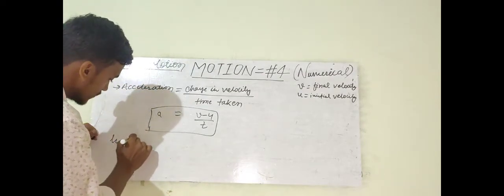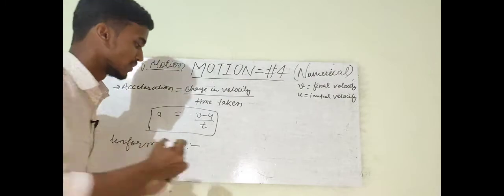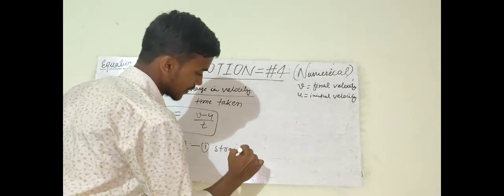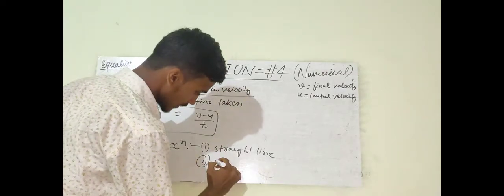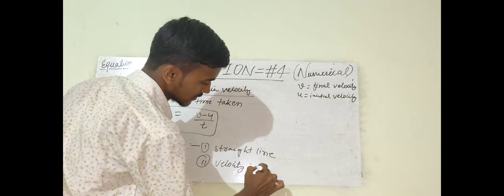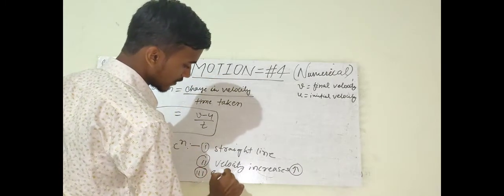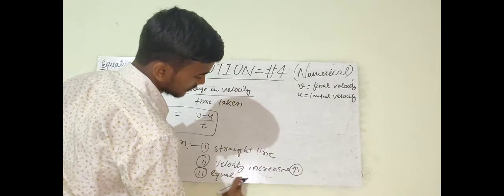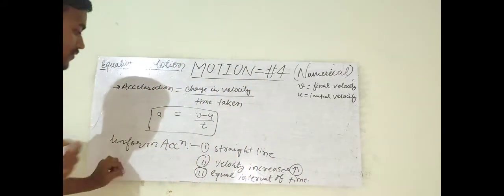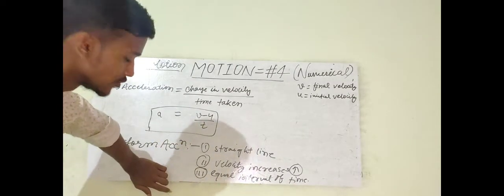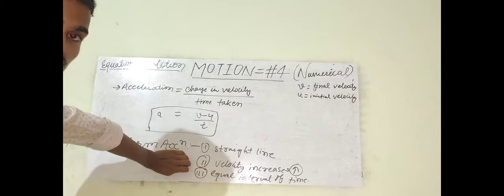The second concept is uniform acceleration. In uniform acceleration, remember three things: the body travels in a straight line, velocity increases, and it increases by an equal amount in equal intervals of time. So the definition is: a body is said to have uniform acceleration if it travels in a straight line when its velocity increases with equal intervals of time.